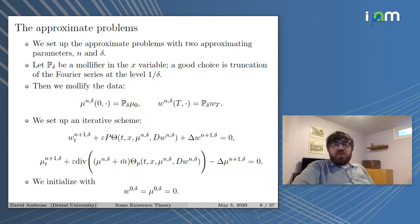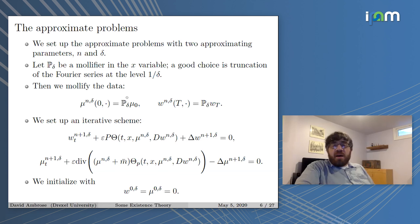I'm going to use two approximation parameters, N and delta. Focusing on the simplest case of data — the payoff function gives a prescribed terminal value function — so W at time capital T would be some given W_T. I mollify the data by applying a mollifier P_delta to both Mu-naught and to W_T. P_delta can be any reasonable regularization operator; a good choice on the torus is truncation of the Fourier series after roughly one-over-delta modes. Then the data would be infinitely smooth.